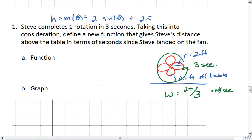This means that at any given time, θ equals the angular speed times the time, or in this case, 2π/3 times t, where, yes, we have a new variable, so t equals time on fan in seconds.